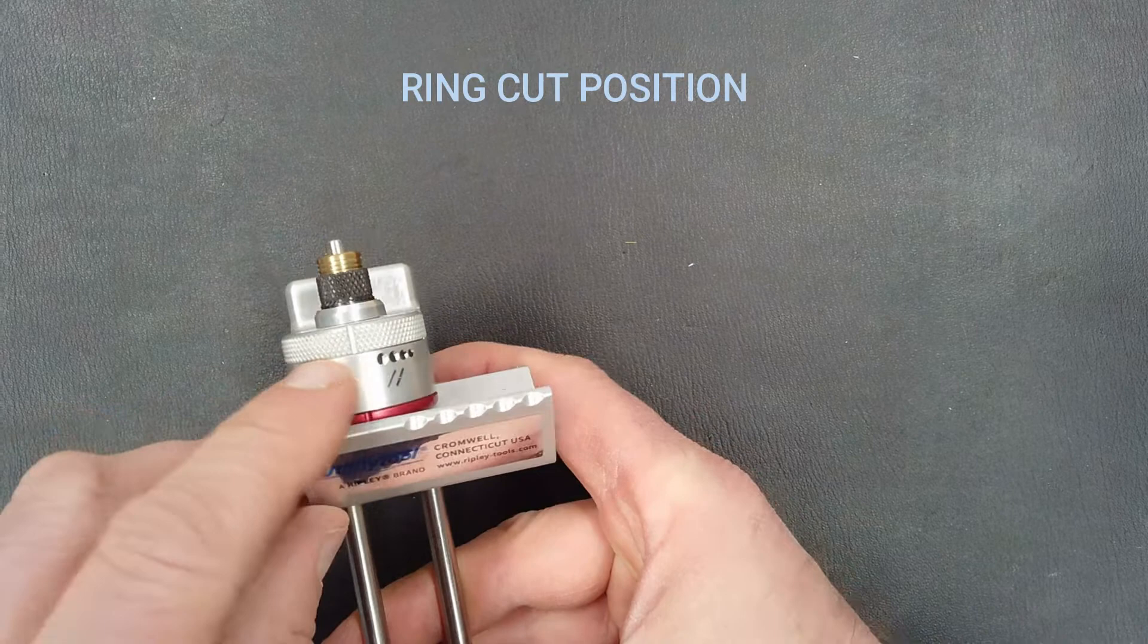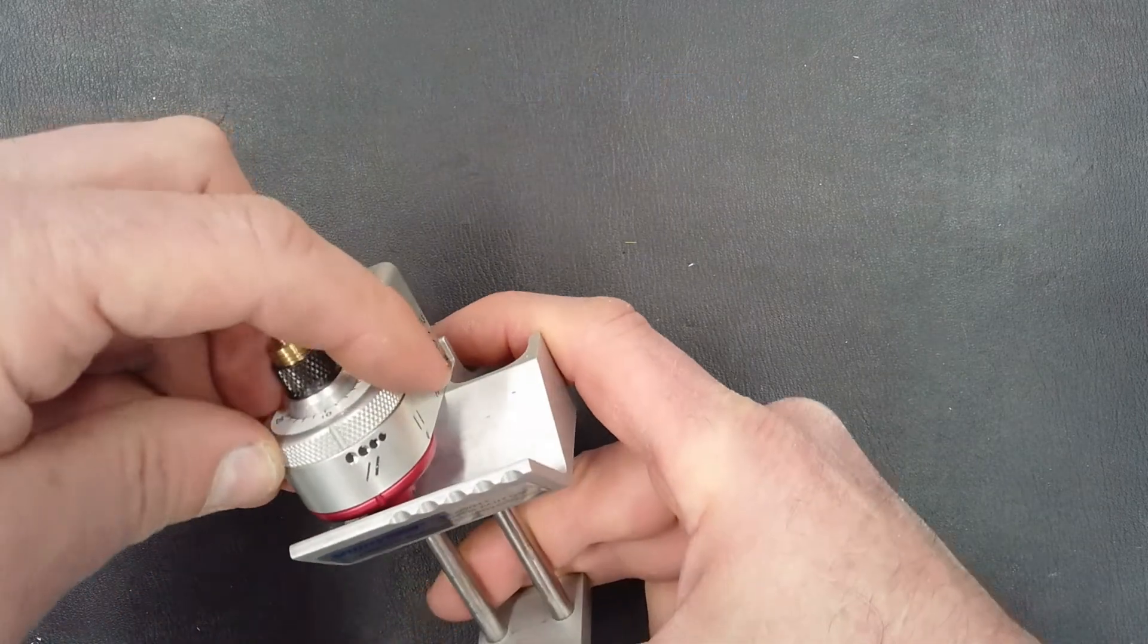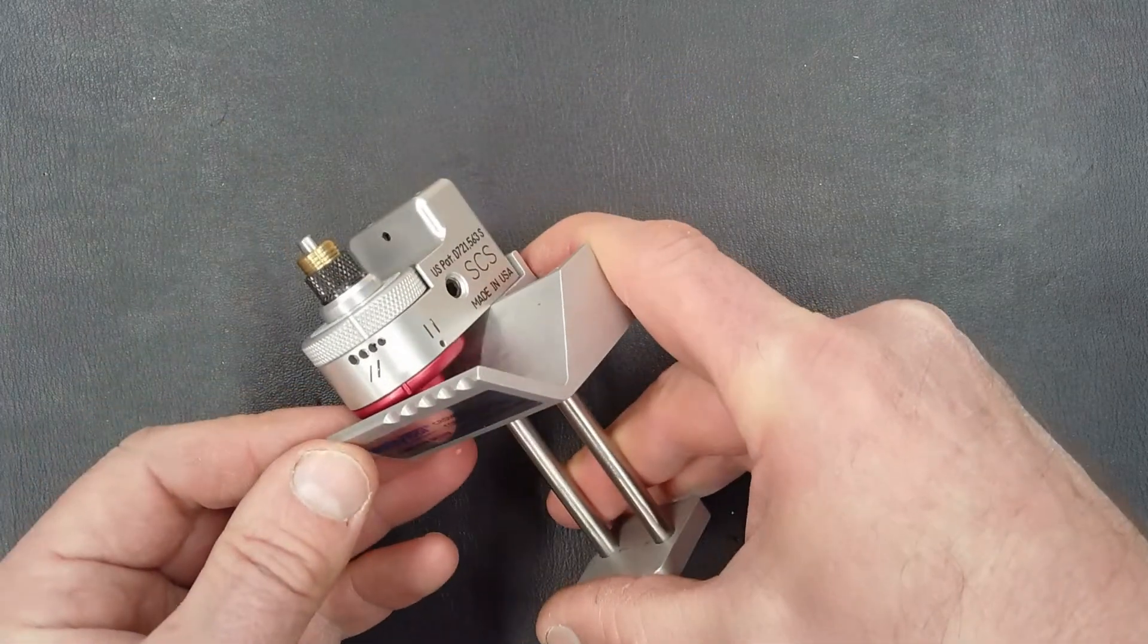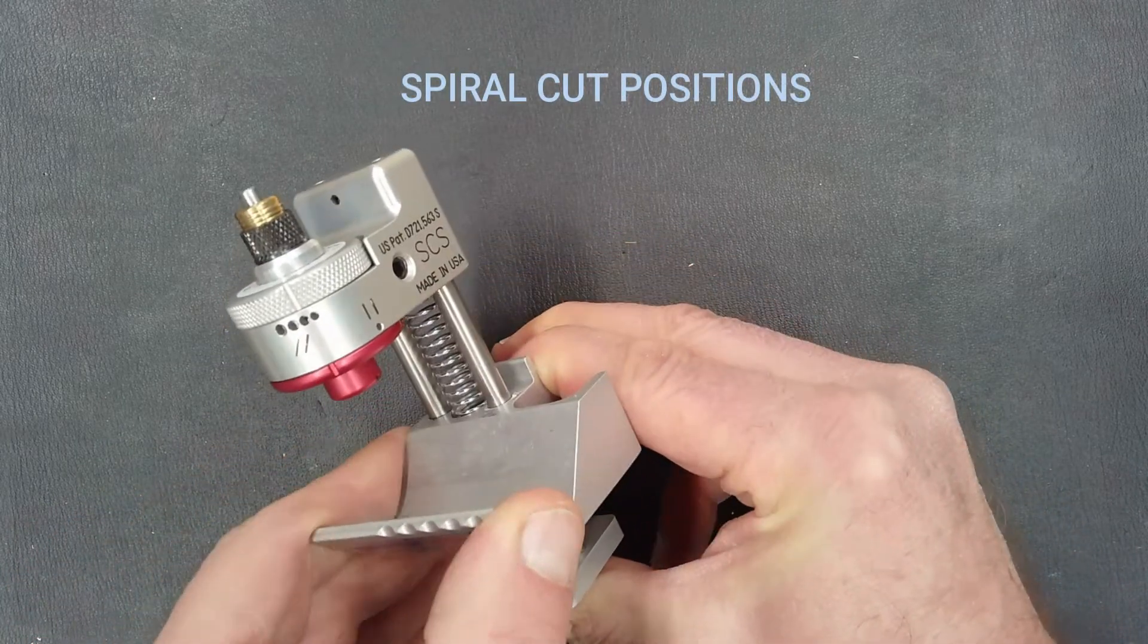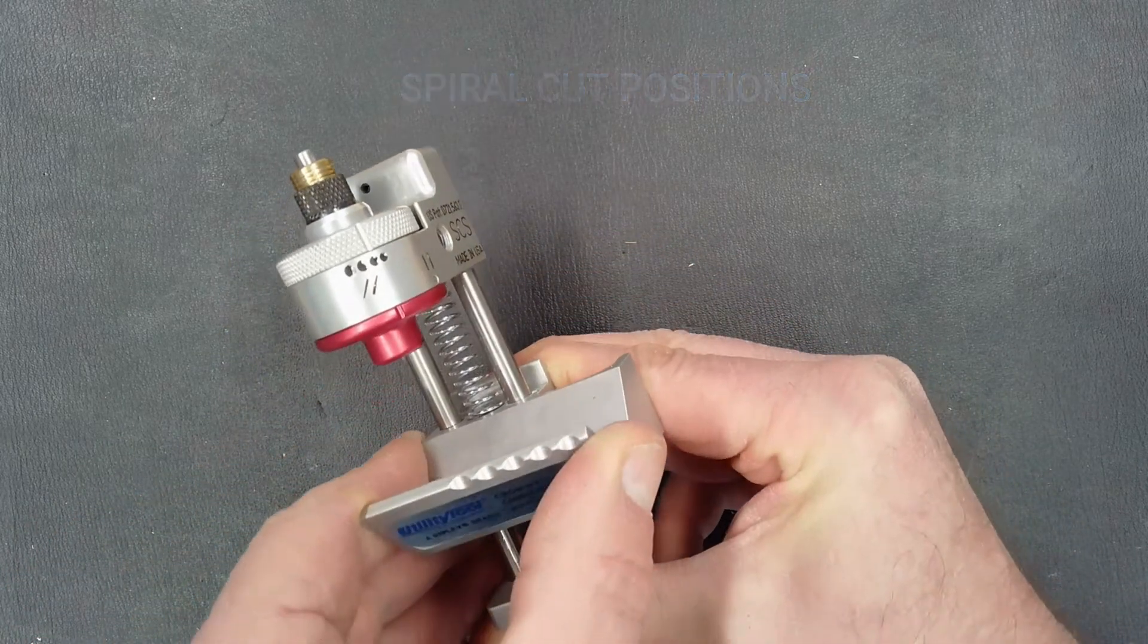The blade head assembly rotates. The tool can be set to a ring cutting action or a spiral cutting position with multiple speeds, depending on the cable diameter, allowing you to dial in the chip width as you spiral down the cable.